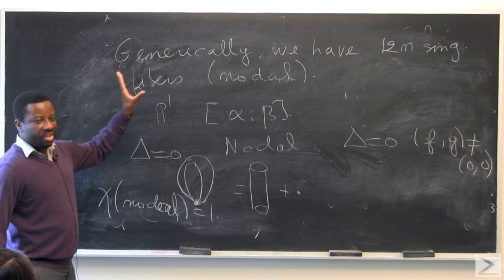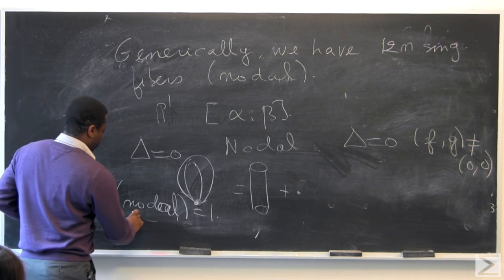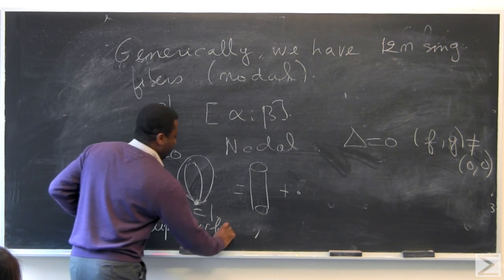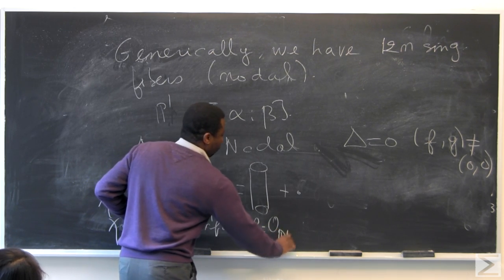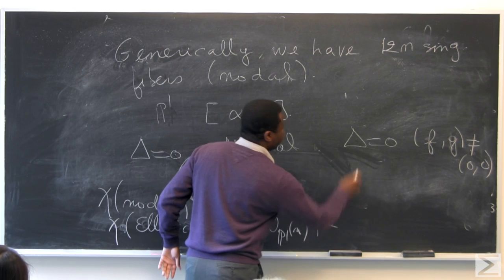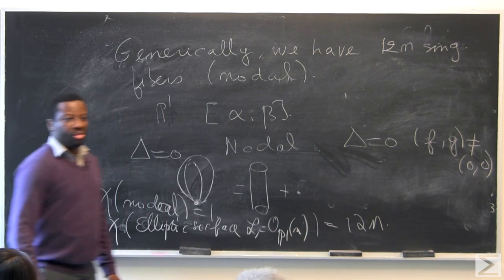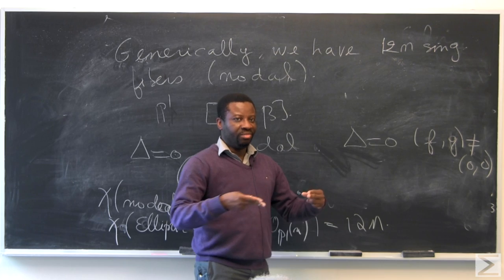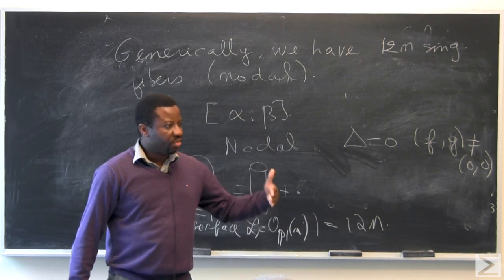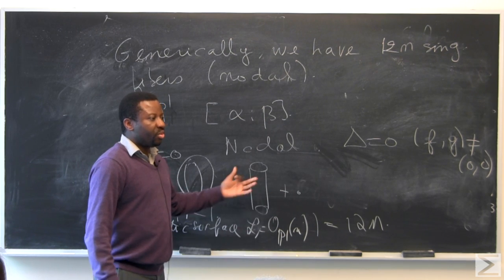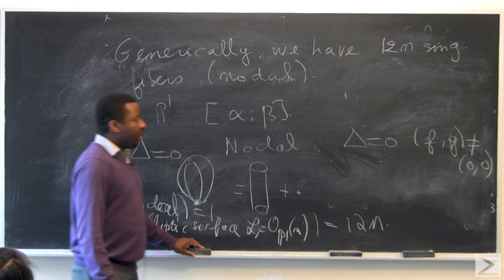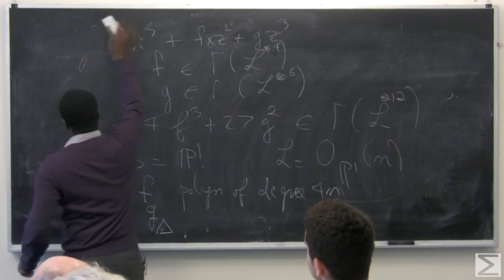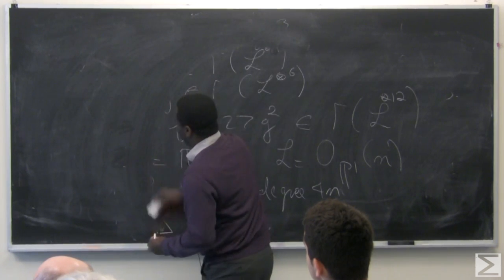In the generic case, the Euler characteristic of an elliptic surface with L equal to O_{P1}(N) is just going to be the sum of contributions from the nodal curves — like a computation by cutting and pasting. I know I only get contribution from singular fibers, they are all the same type, so the number of singular fibers does the work for me. But in reality, elliptic fibrations are complicated.